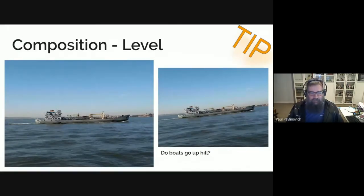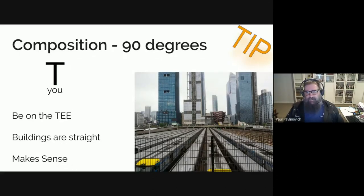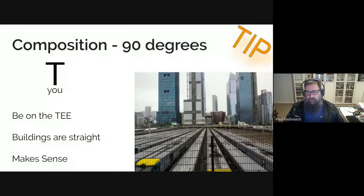In this particular image, if I took it again I'd probably have the boat more to the left of the picture, because that gives the boat somewhere to travel across the image. When talking about big buildings, if you're not at 90 degrees then they get bent and start to look a little bit wonky. Being at 90 degrees — or square on — means you're standing directly facing what you're taking pictures of.